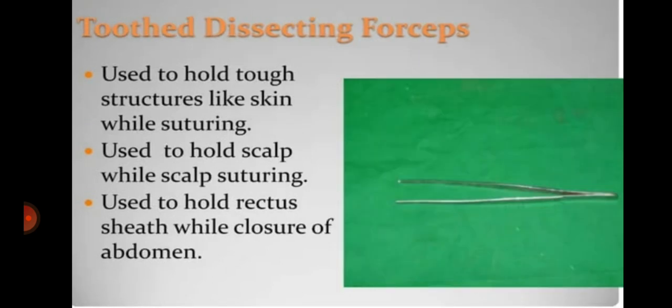Tooth resecting forceps are used to hold tough structures like skin while suturing, used to hold the scalp while scalp suturing, and used to hold the rectus sheath while closing the abdomen.